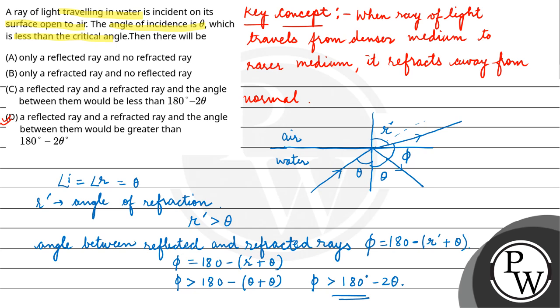Our correct option is option D. This is our final answer: a reflected ray and refracted ray and angle between them would be greater than 180 degree minus 2 theta. I hope you understood it well, best of luck.